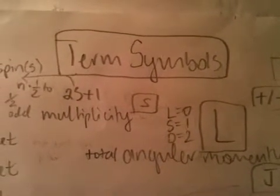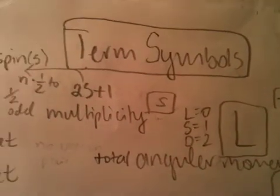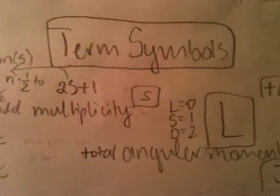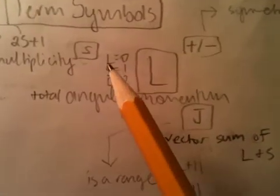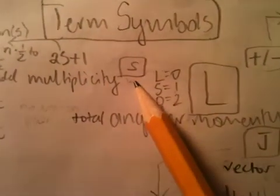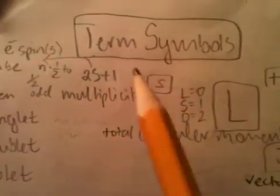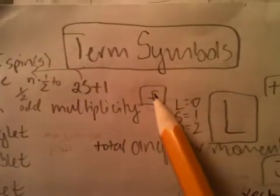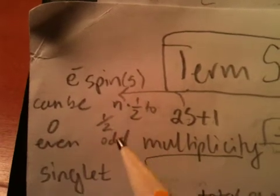The method of notation of the orbitals given by superscript S L subscript J, where these are defined as the multiplicity. S is your multiplicity, defined by 2s plus 1. Now, there are two s's here. This s stands for the multiplicity. However, this s refers to the electron spin or spins, the sum of the spins.